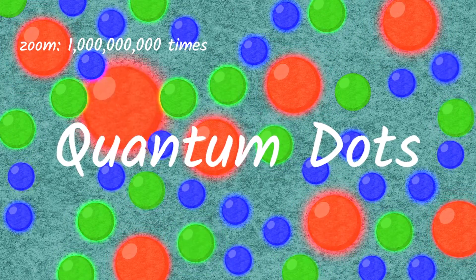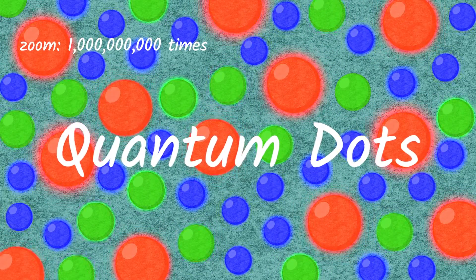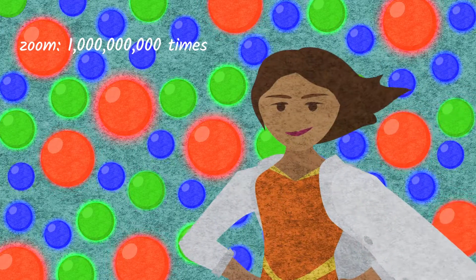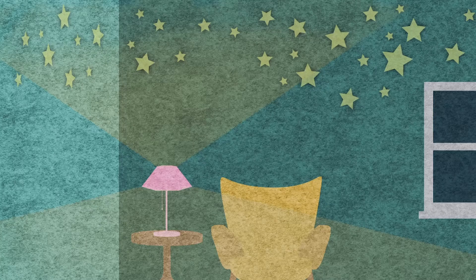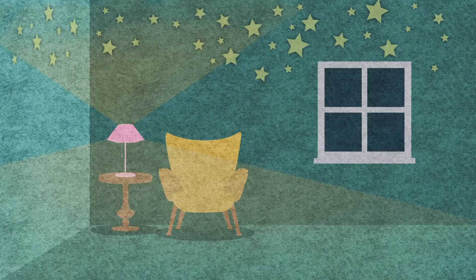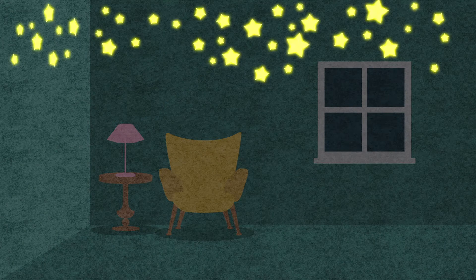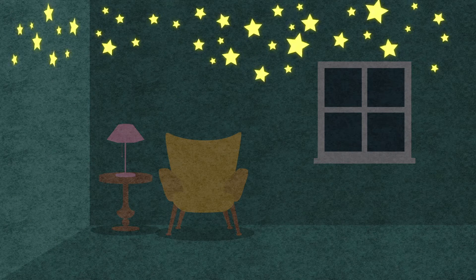Quantum dots are special because they can do some really cool things with light. If you shine light on quantum dots, they glow brightly. Have you ever played with a glow-in-the-dark toy? These stars glow because molecules in them can absorb energy from the light and then release it later when it is dark.